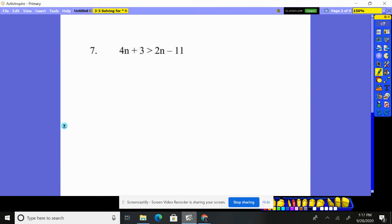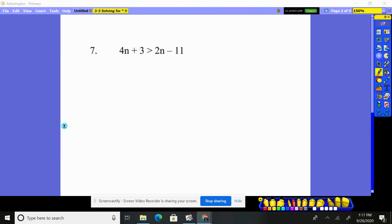Here's problem seven, solving this inequality. We solve it just like an equation - instead of that greater than symbol, we treat it just like an equals. I'm going to subtract 2n from both sides. I get 2n + 3 > -11. Subtract 3 from both sides.